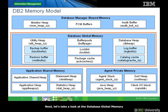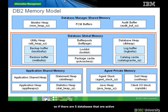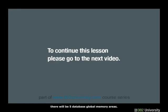Next, let's take a look at the database global memory. This is the memory area used for databases. Each database will have its own database global memory, so if there are five databases that are active, there will be five database global memory areas.